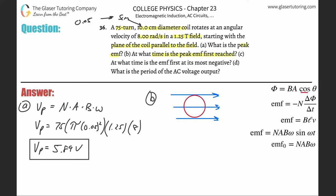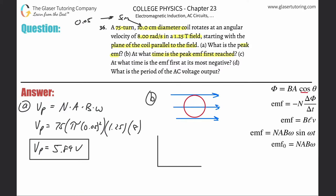We might be lulled into thinking the peak EMF isn't first reached at t = 0, but hold on. The EMF equals the negative change in flux divided by change in time. The peak EMF occurs when that rate of change is at its maximum. So I'm going to create a graph of magnetic flux versus time to figure this out.